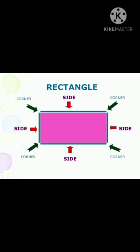Rectangle. A rectangle has four sides and four corners. It has two long sides and two short sides. The length of the rectangle is represented by the long sides and the breadth of the rectangle is represented by the short sides. The opposite sides of a rectangle are of equal length. For example, TV and door.